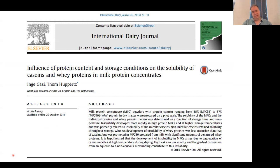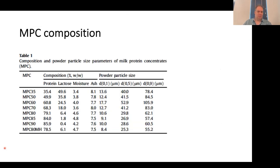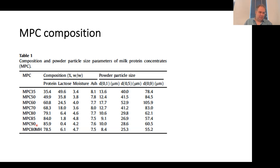Seven years ago, we did a study on milk protein concentrates ranging in protein content, looking at what happens both during production and during storage. We produced different MPCs at pilot scale — from MPC 35 (essentially skim milk powder) all the way up to MPC 90, where pretty much all the lactose has been removed. The range included MPC 35, 50, 60, 70, 80, 85, and 90 — all low-heat products, plus a medium-heat MPC 80 to see what happens when whey proteins are denatured.